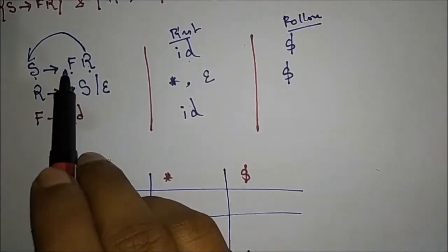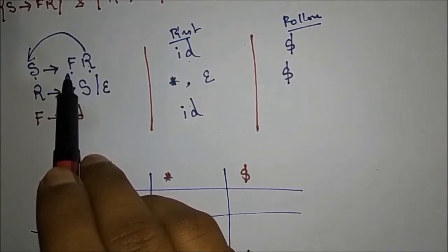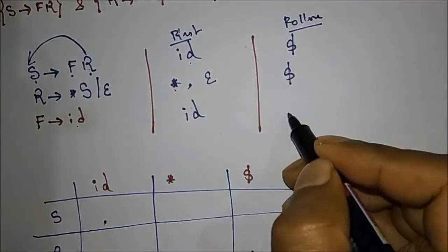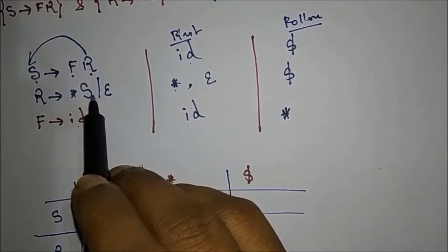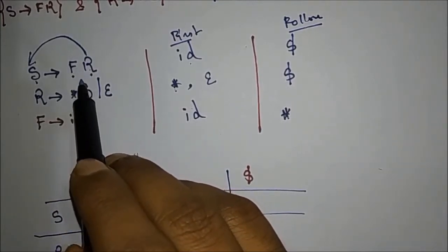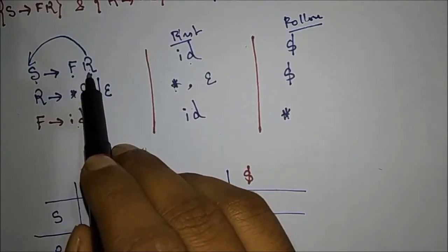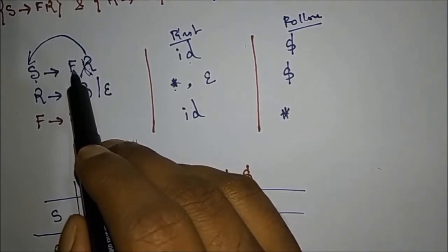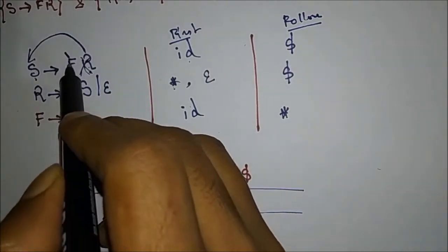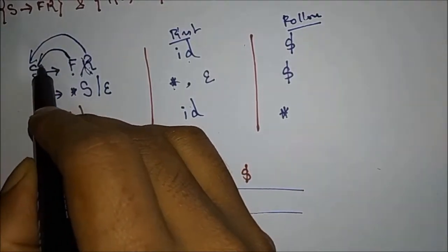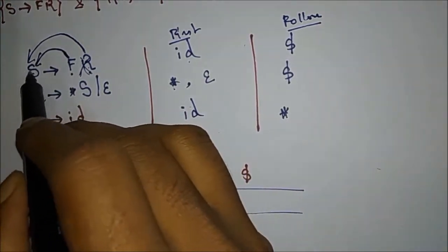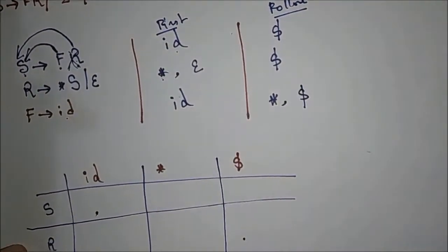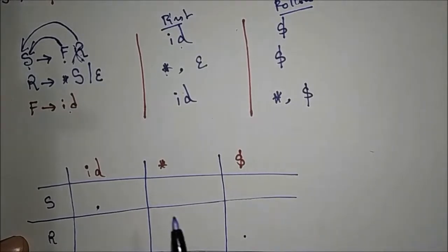Now what is FOLLOW(F)? F is present on the right-hand side in S → F R. FOLLOW(F) includes FIRST(R). FIRST(R) is asterisk (*). Since epsilon is in FIRST(R), if we place epsilon in place of R, then F is followed by nothing, so we also include FOLLOW(S). Therefore FOLLOW(F) = {*, $}.